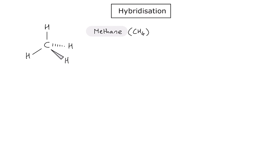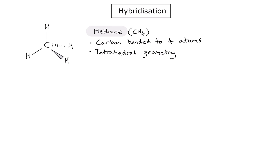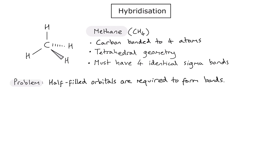Let's take a look first of all at methane. It has the molecular formula CH₄. My carbon is bonded to four hydrogen atoms, giving a nice tetrahedral geometry. In order to form that symmetrical tetrahedral geometry, we must have four identical sigma bonds. The problem is that to form a sigma bond, an atom needs to use a half-filled orbital overlapping with a half-filled orbital from another atom.